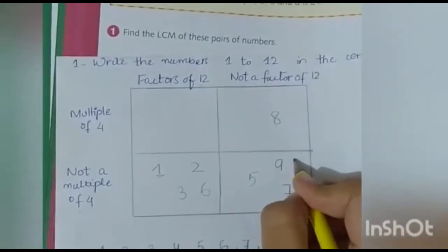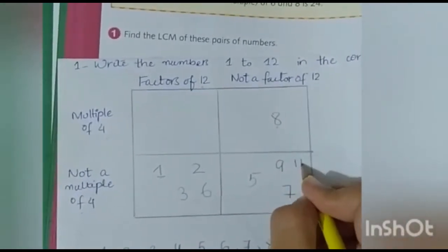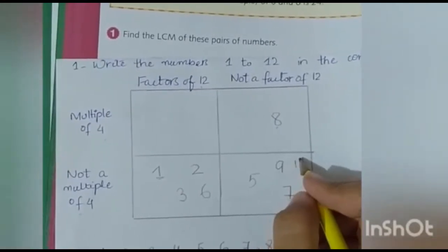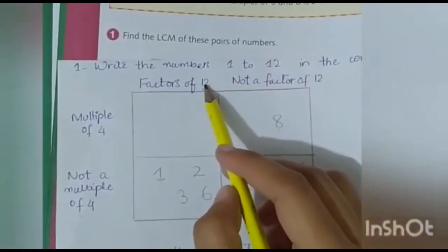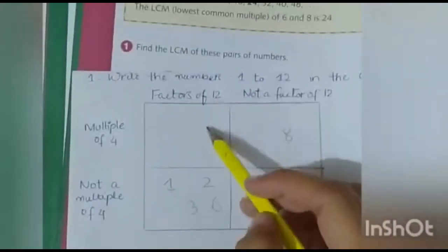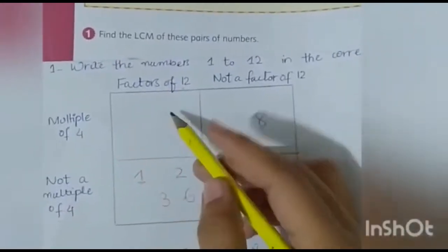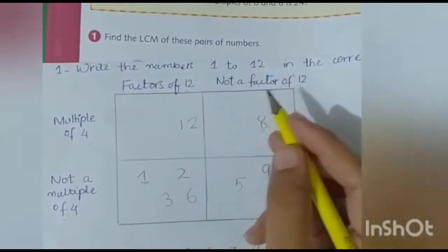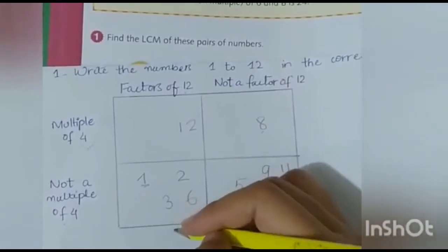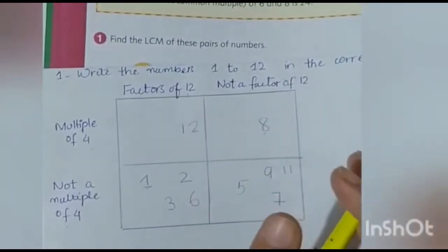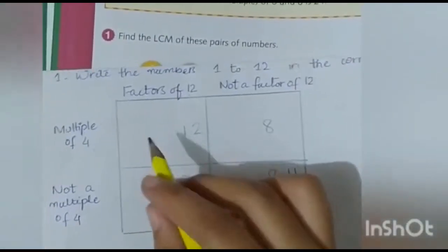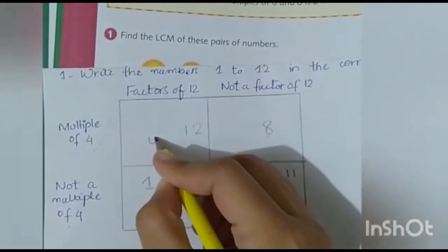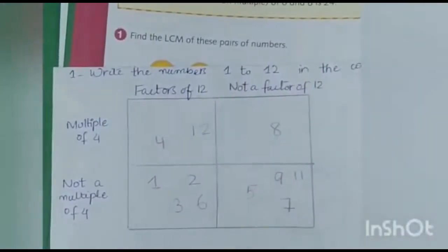Eleven will be placed in the same way. Twelve is also a factor of 12, and 12 is also in the 4 times table, so 12 goes in the factor-of-12 and multiple-of-4 column. And 4 — I forgot to write 4 — 4 is also a multiple of 4 and is in the 4 times table, so 4 also goes here.